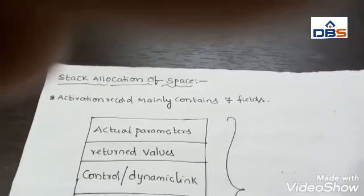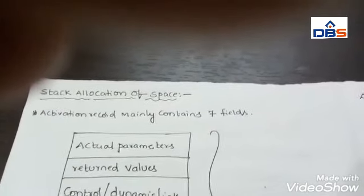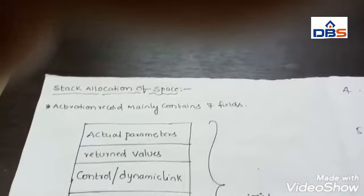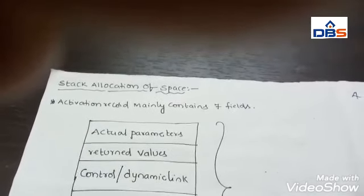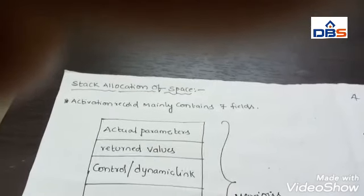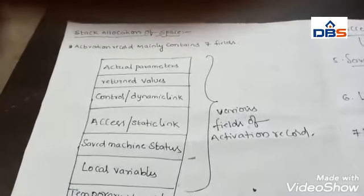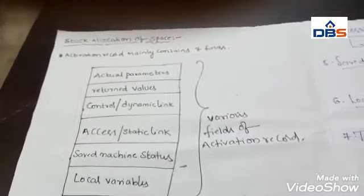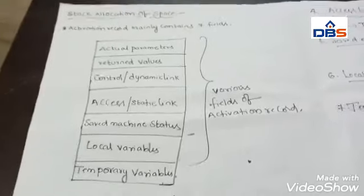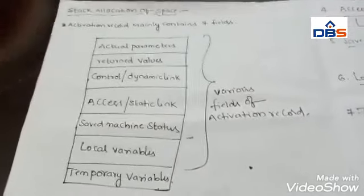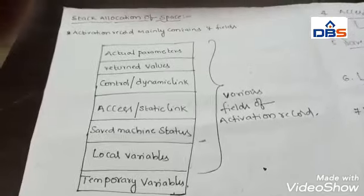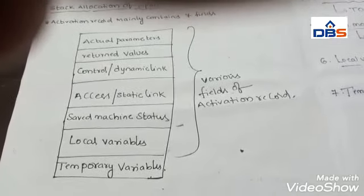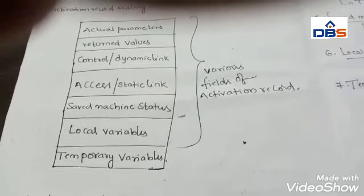What is an activation record? Whenever a function or procedure call occurs, an activation record gets created and its information is pushed onto the top of the stack. In this diagram we will see the model of the activation record — the various fields of activation records. There are seven fields: actual parameters, return values, control link or dynamic link, access or static link, saved machine status, local variables, and temporary variables.